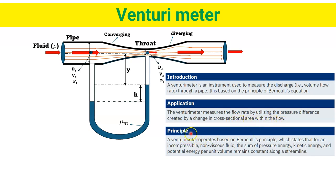A Venturimeter operates based on Bernoulli's principle, which states that for an incompressible, non-viscous fluid, the sum of pressure energy, kinetic energy, and potential energy per unit volume remains constant along a streamline.